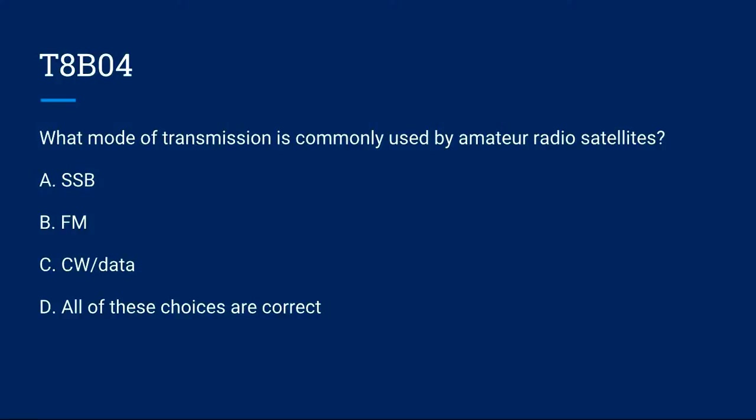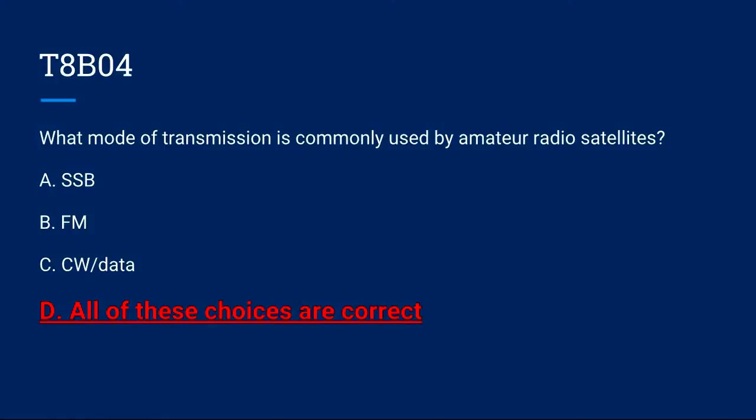T8B04: What mode of transmission is commonly used by amateur radio satellites? A. SSB. B. FM. C. CW or data. D. All of these choices are correct. The correct answer is D: all of these choices are correct.